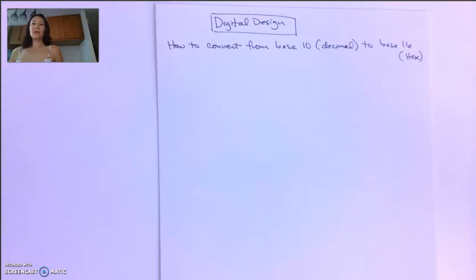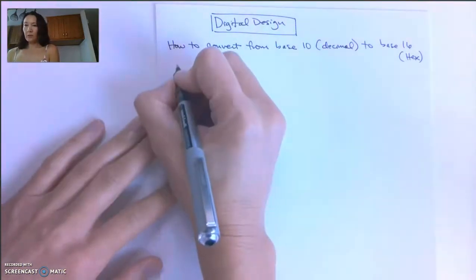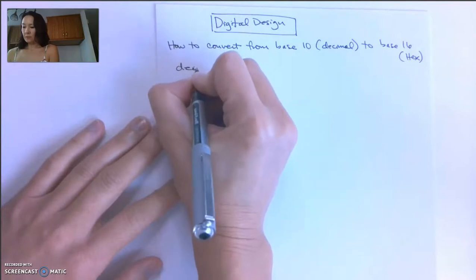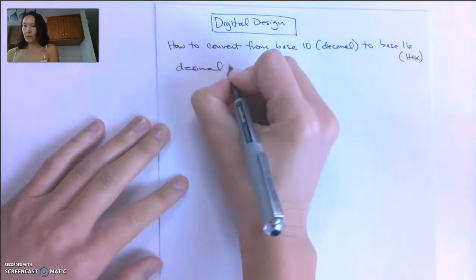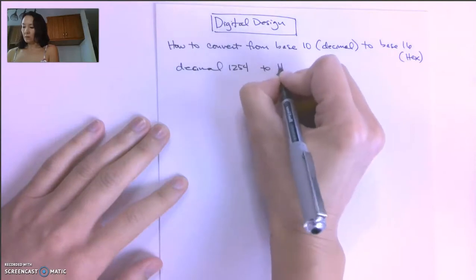Let's use what we saw in the iterative division algorithm video to convert from decimal base 10 to hexadecimal base 16. So to start, let's convert decimal 1254 to hex.